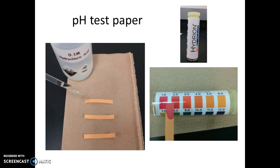The next test is similar to the litmus test but uses pH test paper, which comes in a small vial and starts as a light orange color. Arrange three strips on a paper towel and add a drop of each solution onto the paper. Compare the resulting color to the chart on the side of the bottle — a strong acid appears red and a strong base appears blue.